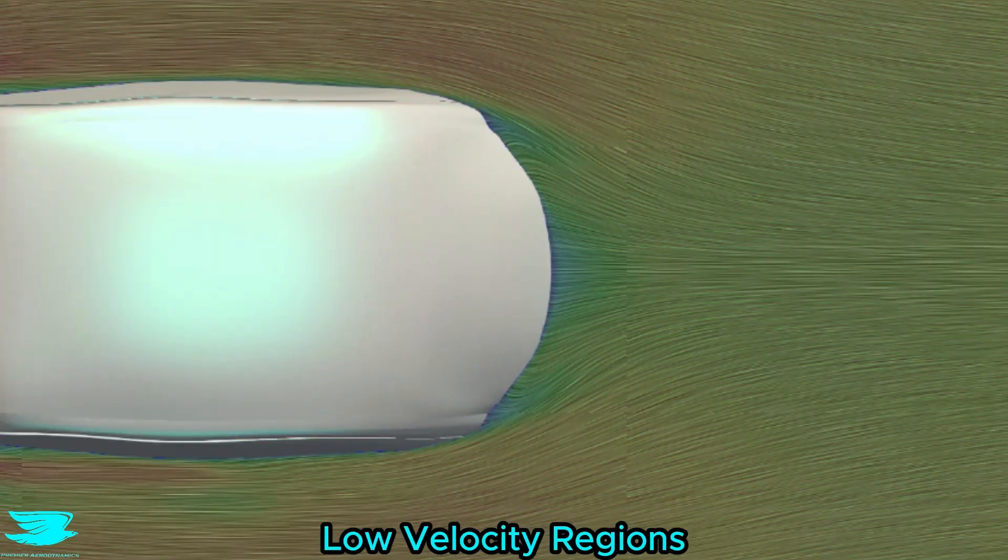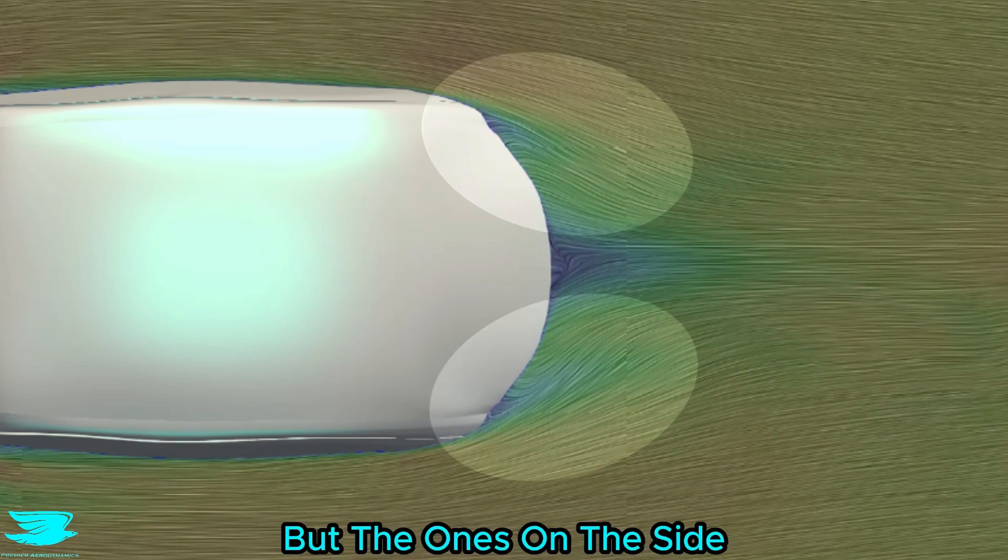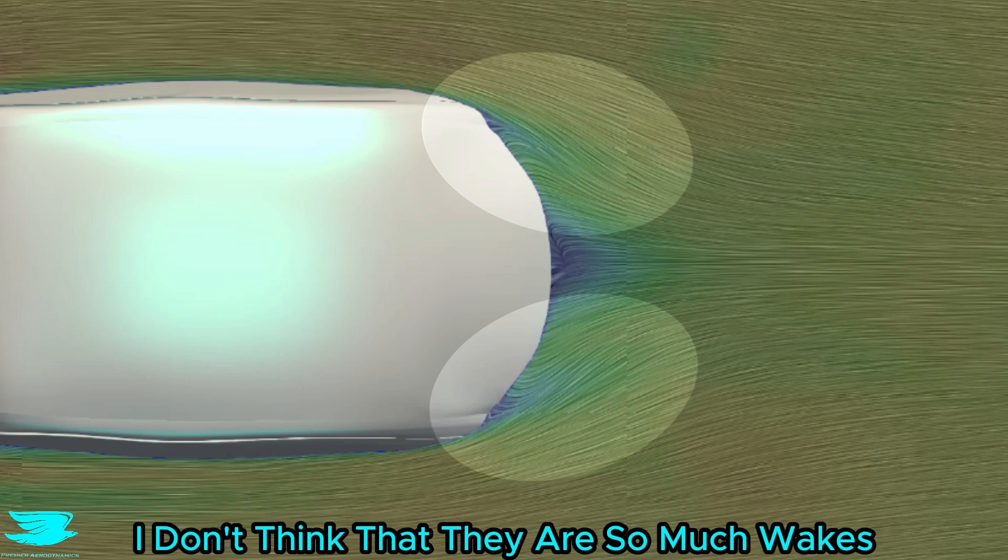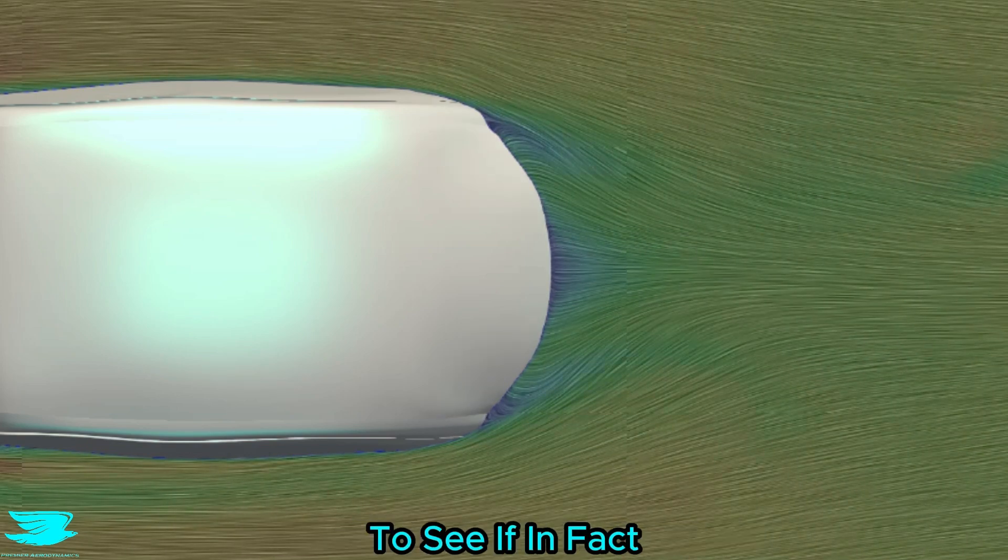At the back, we see three low velocity regions. The middle one is the minor wake that forms near the bottom of the rear window, but the ones on the sides, I don't think that they are so much wakes, but more vortices coming from the C pillars, the pillars at the back. But let's look at the vortices to see if in fact they are.